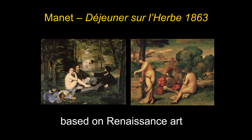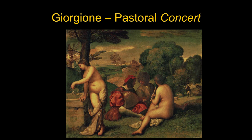Most people didn't realize what Manet was doing — there was one critic who did, but most people looking at this never even thought about Renaissance art. What Manet is doing is updating Renaissance art, doing a 19th-century version that refers to a few Renaissance paintings. One of them is a painting traditionally attributed to Giorgione, sometimes to Titian, and sometimes people say Giorgione and Titian collaborated — a Giorgionesque painting by a famous 16th-century painter.